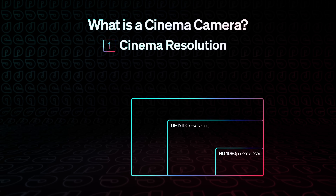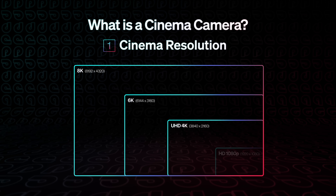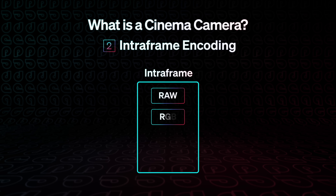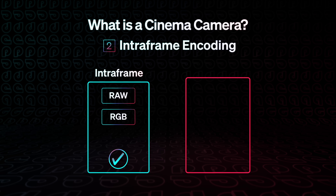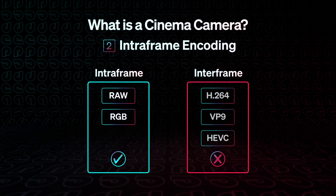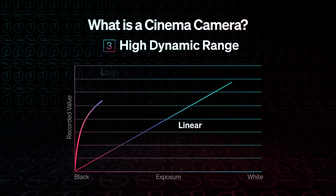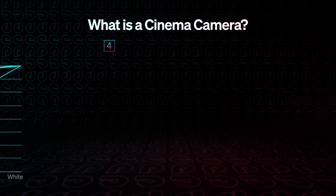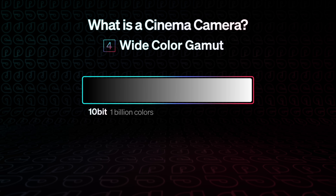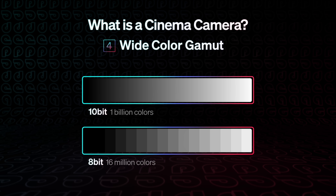I actually think it boils down to five things. First, it needs to have cinematic resolution — today, that means 4K or above. Second, it needs to encode files using intra-frame encoding: RAW or RGB files, not web compression group-of-pictures codecs like H.264, VP9, or HEVC. Third, it must capture high dynamic range, recording logarithmically beyond 12 stops with no baked-in gamma correction. Fourth, it must capture color with at least 10 bits per pixel, which means more than 60 times the color fidelity of 8-bit web encoding cameras.